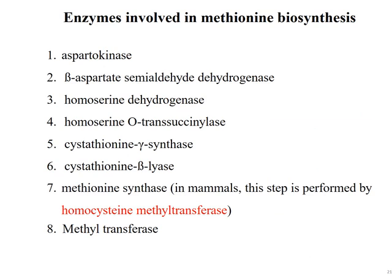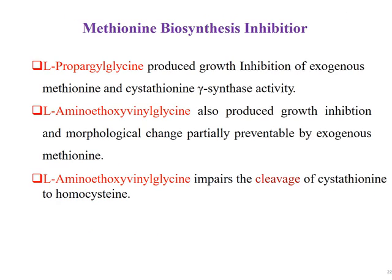Enzymes involved in methionine biosynthesis include: aspartokinase, beta-aspartate semialdehyde dehydrogenase, homoserine dehydrogenase, homoserine O-transsuccinylase, cystathionine synthase, cystathionine beta-lyase, methionine synthase, and methyltransferase. The methionine biosynthesis inhibitor L-propargylglycine produces growth inhibition preventable by exogenous methionine and inhibits cystathionine synthase activity. L-Aminoethoxyvinylglycine also produces growth inhibition and morphological changes partially preventable by exogenous methionine, and impairs the cleavage of cystathionine to homocysteine.